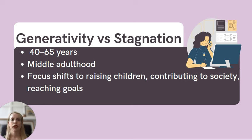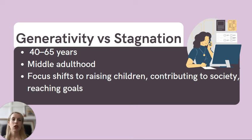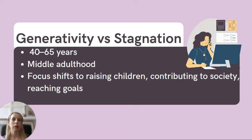Next up, we have generativity versus stagnation, which is middle adulthood, ages 40 to 65. Middle-aged adults tend to be focused on raising children and contributing to society, reaching their career goals, and caring for the next generation. It's not uncommon for adults to shift their focus to giving back to society and meeting personal goals and interests.